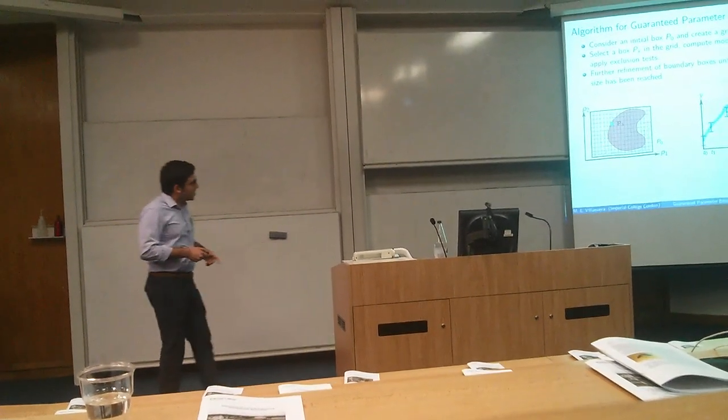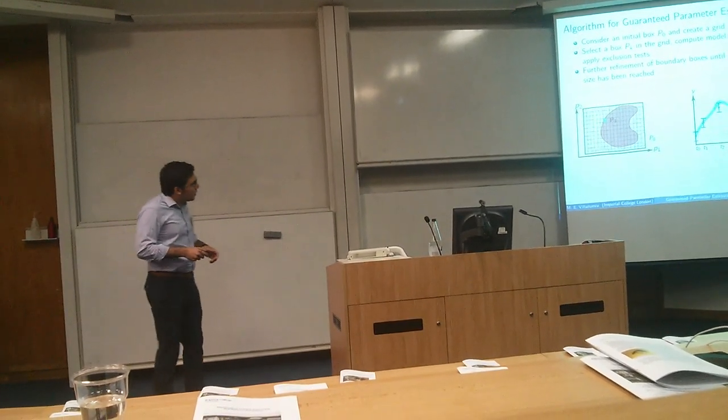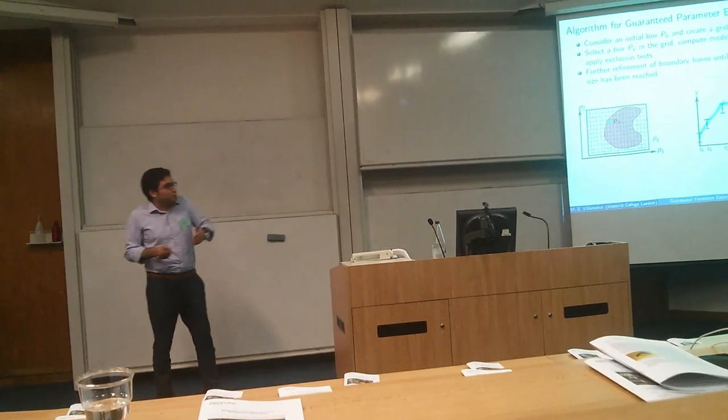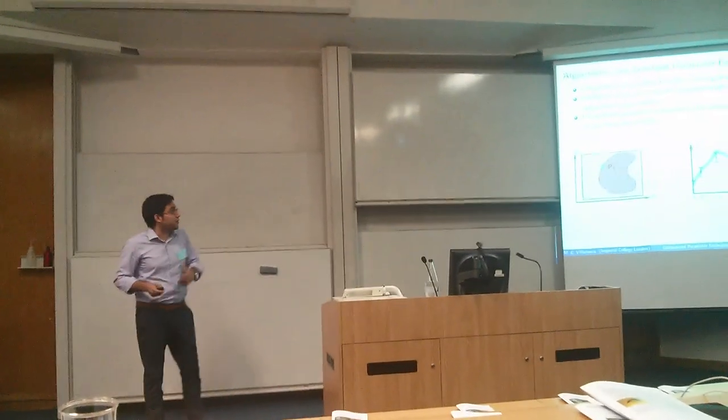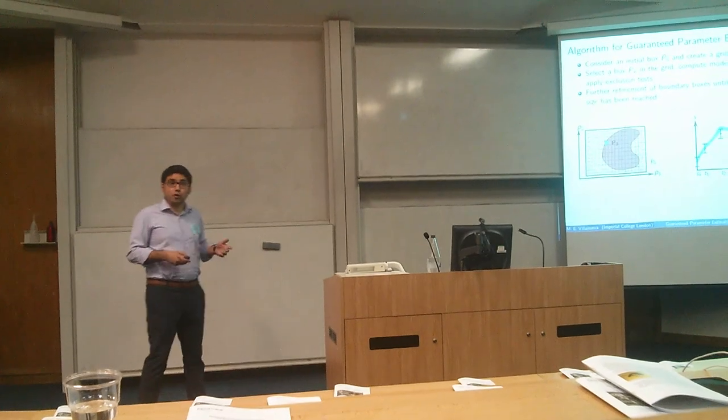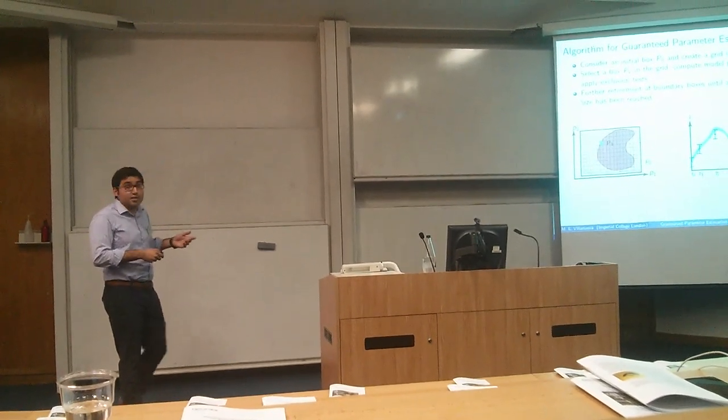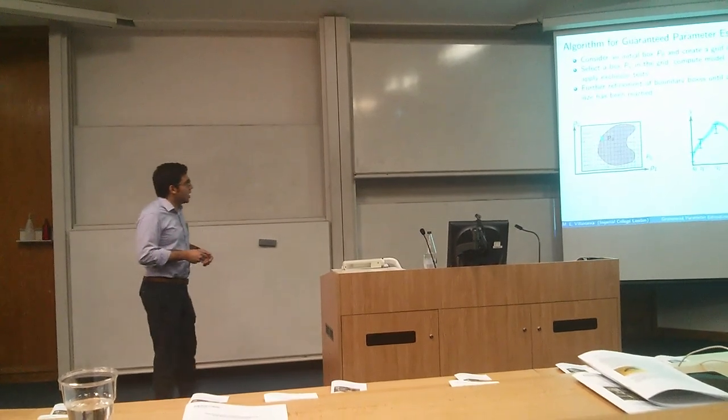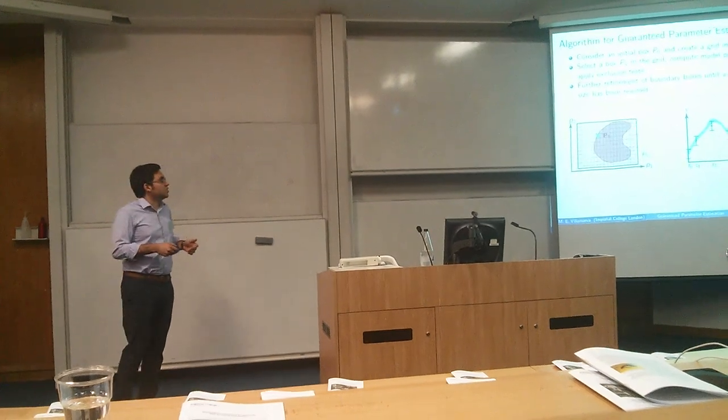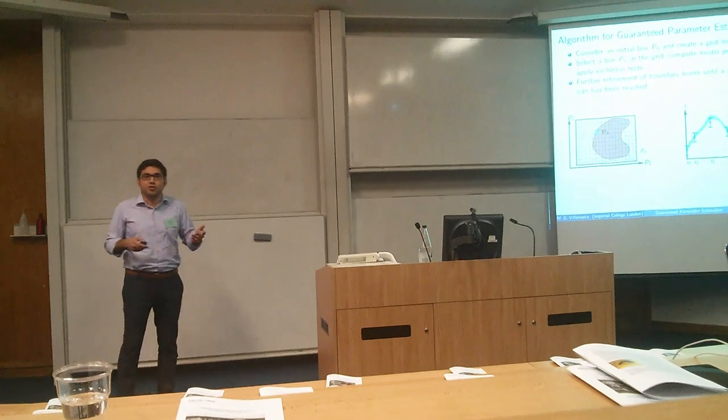What happens if, when I take my box, in this case my box B3, and what happens if, for one measurement, the model output is partly inside and partly outside of the error bounds? Well, at this point, the only thing we can conclude from here is that my box is in the boundary of the region that I'm trying to estimate, and we can actually refine these boundary boxes until a chosen minimum box size has been reached. It's a tolerance that the user can give.